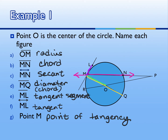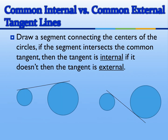There are also secant segments, but more often we'll see the tangent segment versus secant segments, because more than likely a secant segment may end up being a chord unless it goes out of the circle. We'll see a theorem coming up later for that.